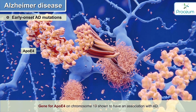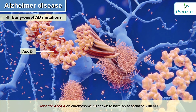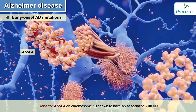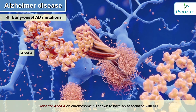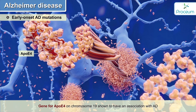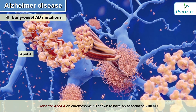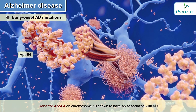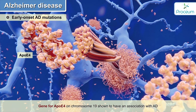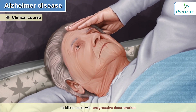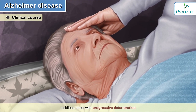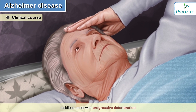The gene for apolipoprotein E4, which is located on chromosome 19, is shown to have an association with Alzheimer's disease.